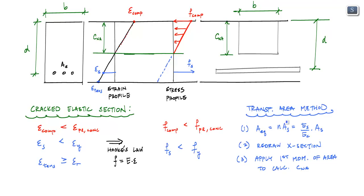I've already done this A equivalent. This area here of the steel is NAS. I just take this area of steel, multiply it by the modular ratio, and I've got the area of steel down here. I've redrawn the cross-section, and now what I want to do is apply the first moment of area to actually come up with a formulation to determine C and A, where I know B, D, NAS.